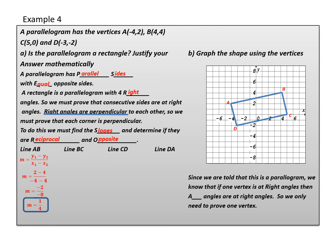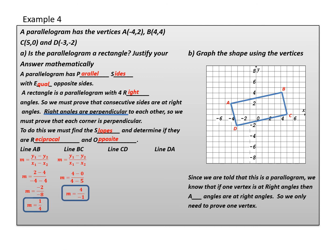Now I'm going to do line BC. Again, given coordinates, so I use the coordinate formula. I've decided that point B (four, four) is my x1, y1. So y1 minus y2 is 4 minus 0, and x1 minus x2 is 4 minus 5. Working this out: 4 minus 0 is 4, and 4 minus 5 is negative 1. So the slope of line BC is 4 over negative 1, or negative 4.